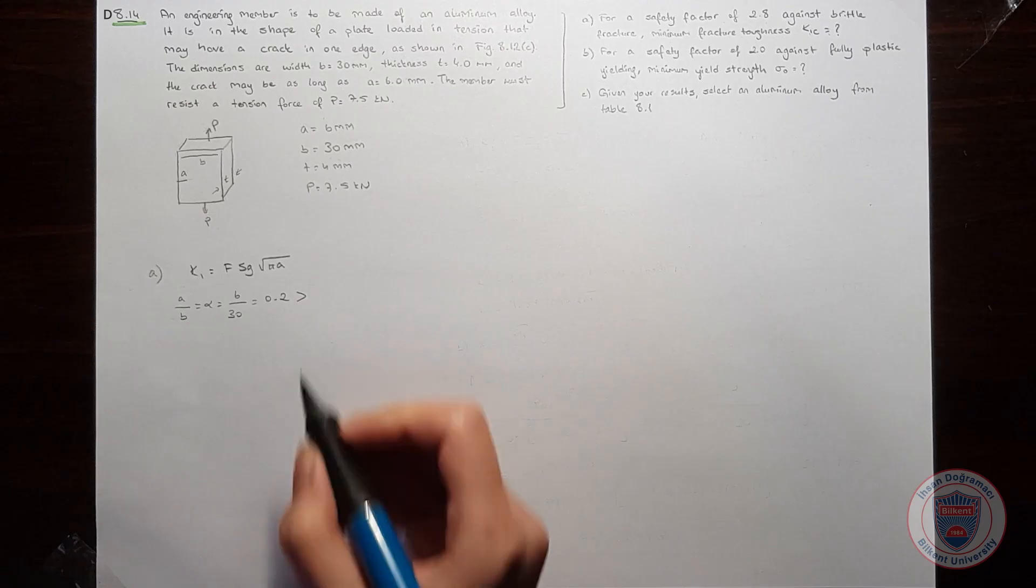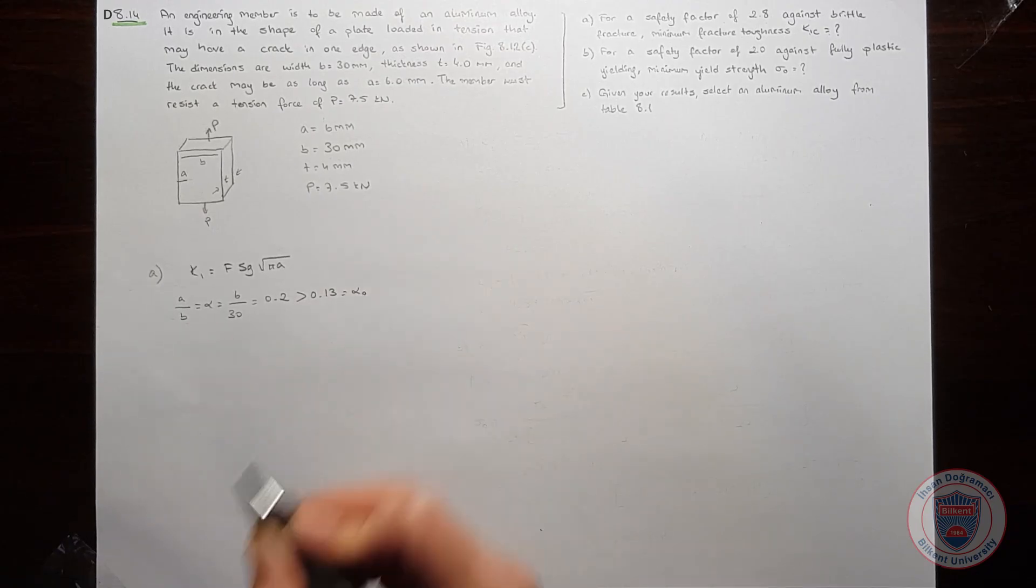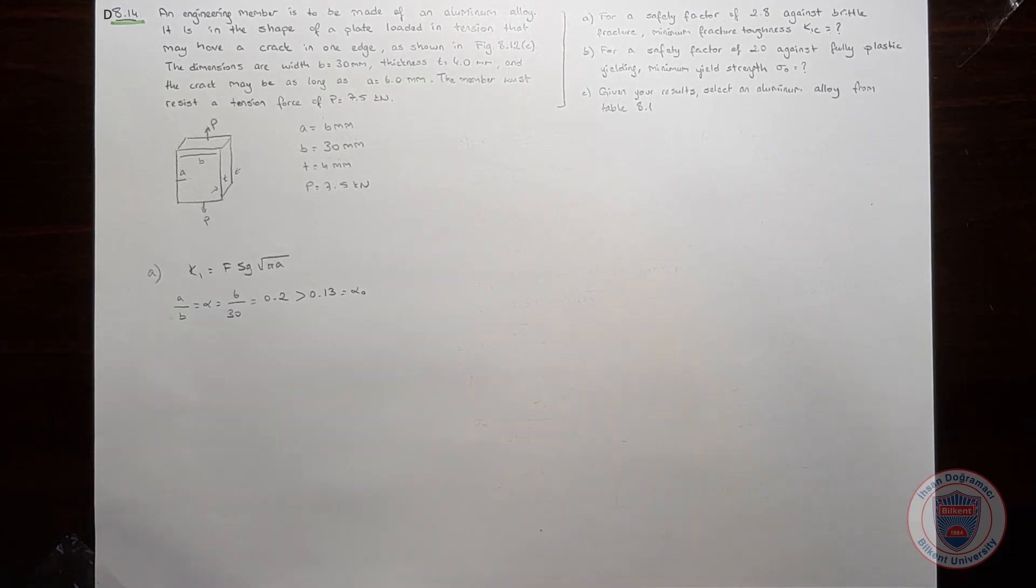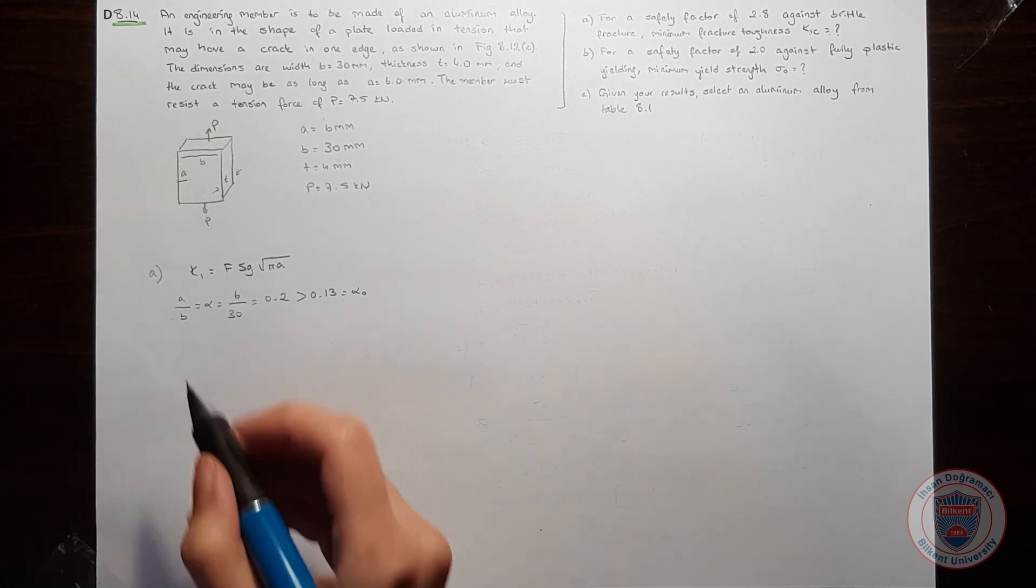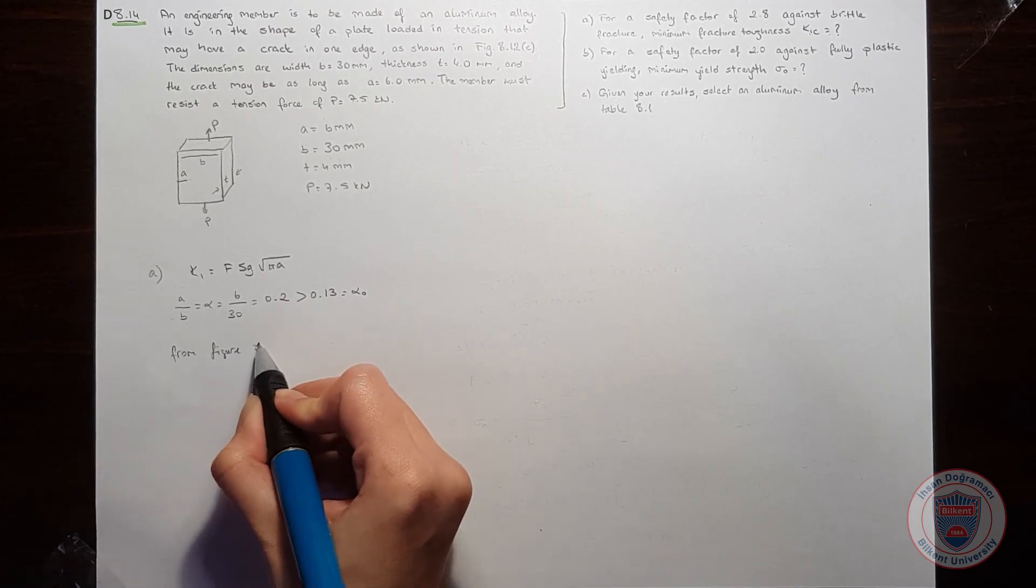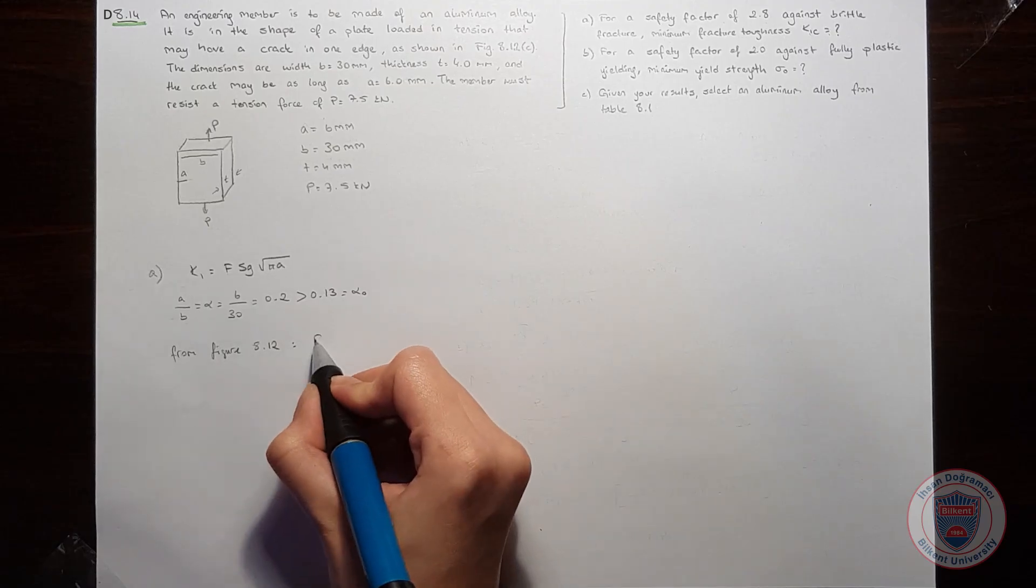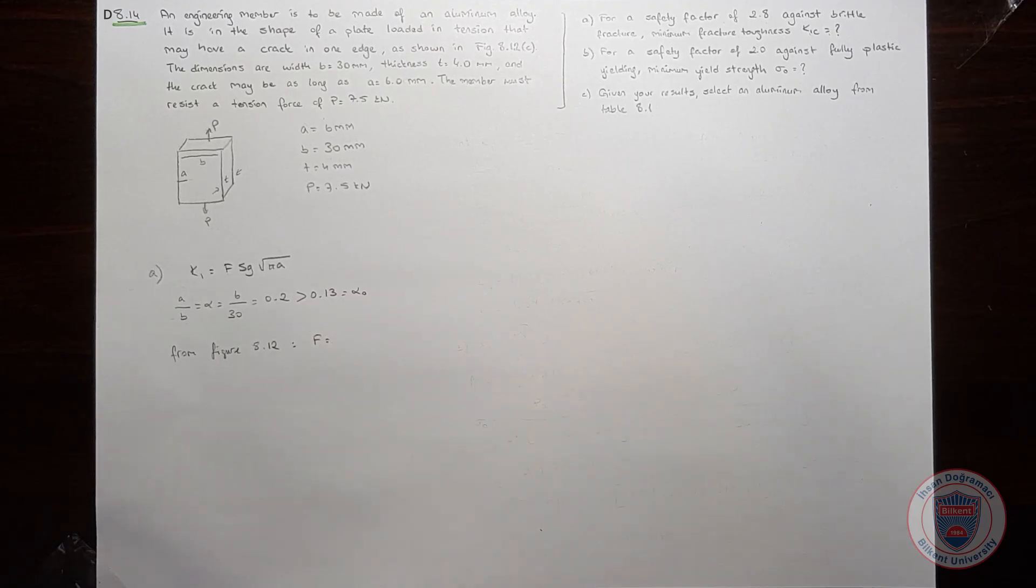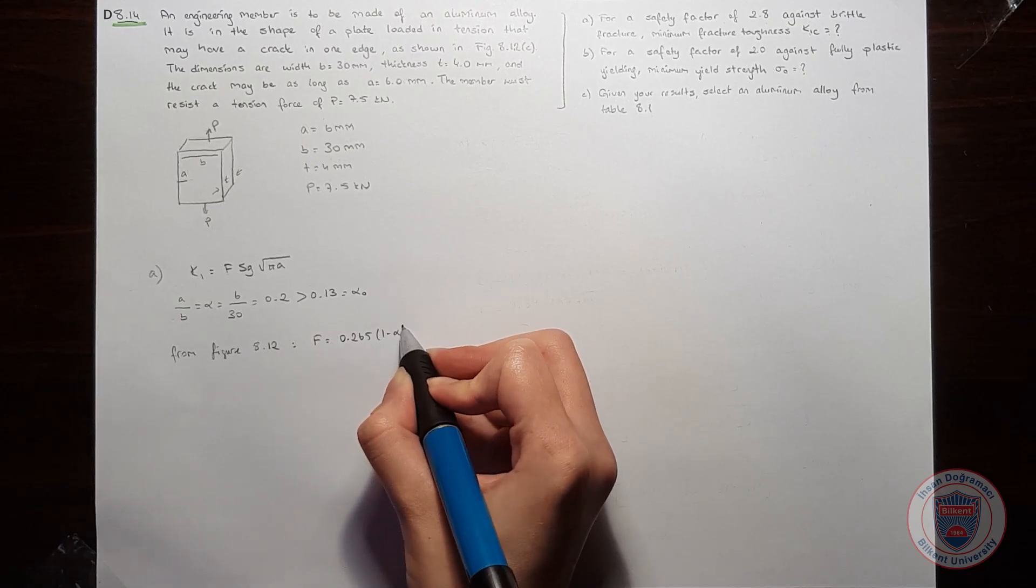This is larger than 0.13, which is equal to alpha_0. So we will need to find a form factor from an equation. In the book, from figure 8.12, we will have an equation for the form factor which is given as...